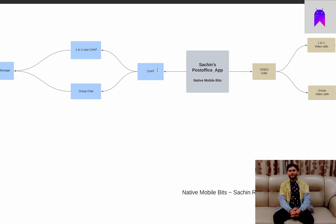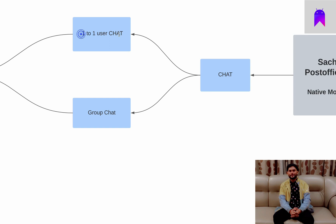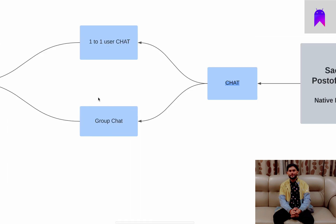Another primary feature is chat. Inside our chat module there will be straightforward one-to-one user chat, and we will also allow users to initiate a group chat. Users can create groups and send messages directly in the group, and other group members will also receive notifications or alerts saying that someone from the group has sent a message. So our application will have a chat module with both one-to-one chat and group chat.